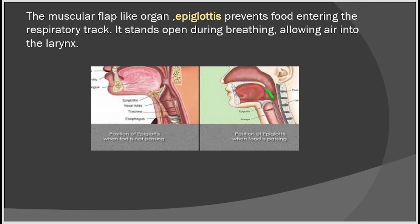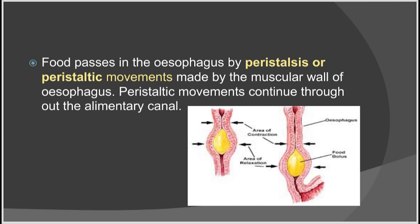The pharynx is a common area for both the digestive and respiratory tracts. The epiglottis helps to prevent food from entering the trachea. As shown in the diagram, the trachea is blocked by the epiglottis when food is passing. The food then enters the esophagus. Food passes through the esophagus by peristalsis — due to contractions and relaxations of its muscular wall, peristaltic movements appear as waves, moving food into the stomach.